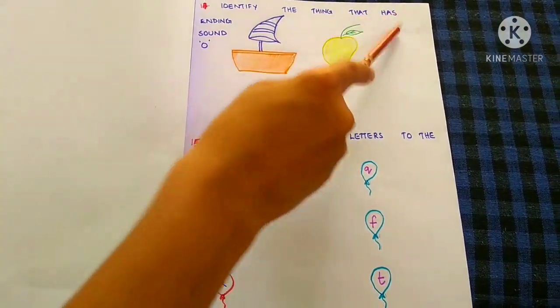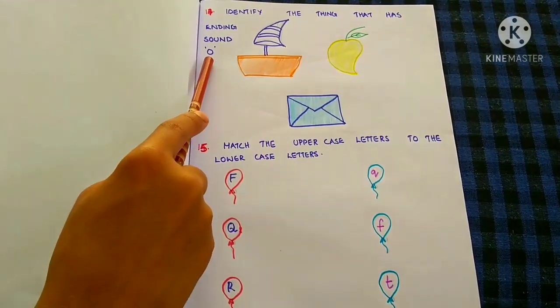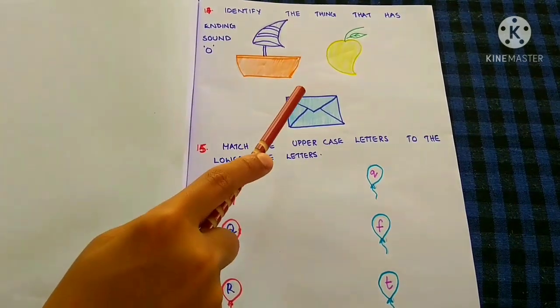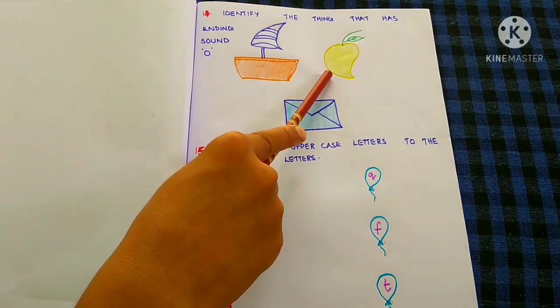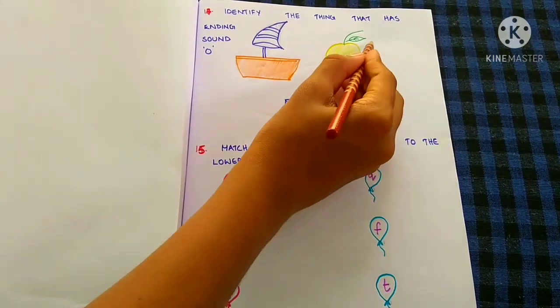Identify the thing that has ending sound O. Envelope, Mango. Mango has ending sound O, so we have to circle it.